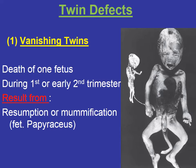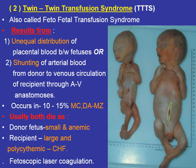Congenital anomalies related to twin pregnancy include: first, vanishing twin syndrome — the death of one embryo or fetus in the very early period, specifically in the first or early second trimester. This results in resorption or mummification of the dying baby, which is then called fetus papyraceus. The baby may be so small that it is difficult to recognize the pregnancy as a twin.